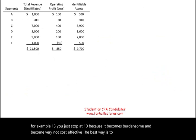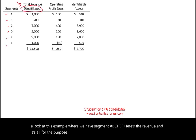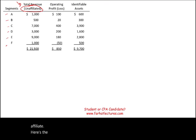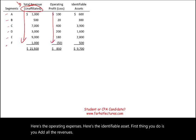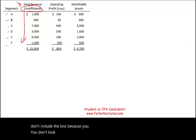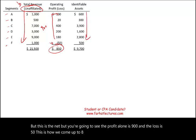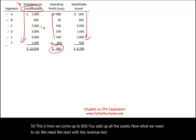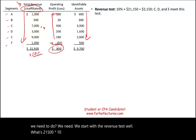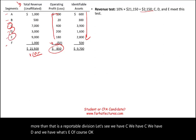Let's look at an example with segments A, B, C, D, E, and F. For this example, all revenue is to external customers. First, we apply the revenue test: total revenue is 21,500, and 10% of that is 2,150. Any division with revenue above 2,150 is reportable under this test. Segments C, D, and E meet this threshold. We don't stop there.